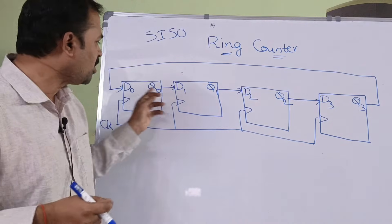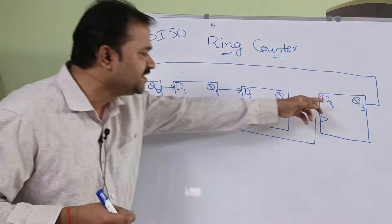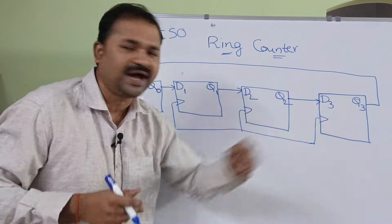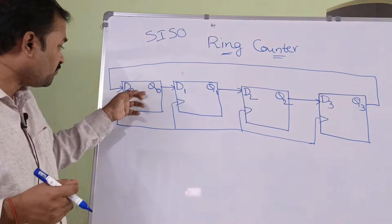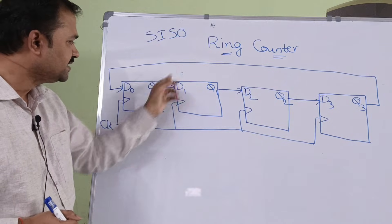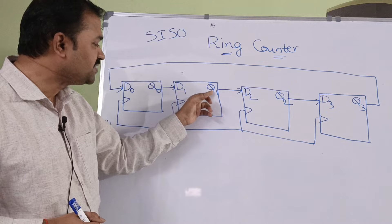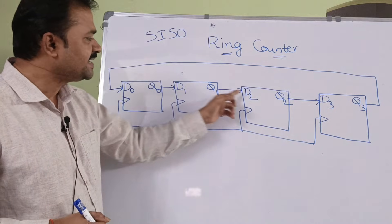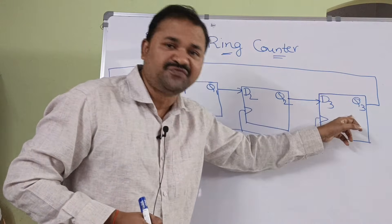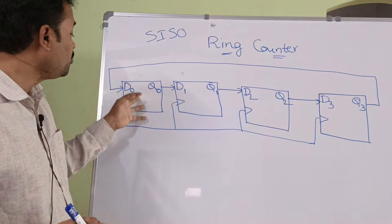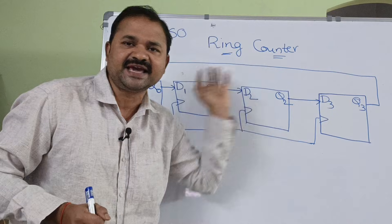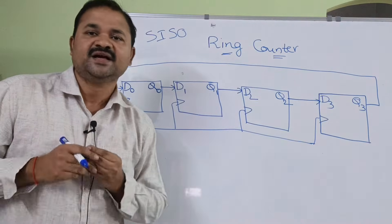The inputs of the flip-flops are D0, D1, D2, D3, and the outputs are Q0, Q1, Q2, and Q3. The output of the first flip-flop Q0 is connected as input to the second flip-flop. Likewise, the output of the second flip-flop is connected as input to the third flip-flop, and the output of the last flip-flop is connected as input to the first flip-flop. This circular connection is why it is named a ring counter.